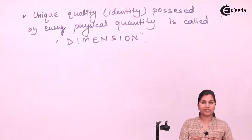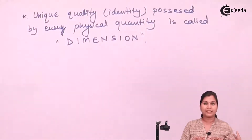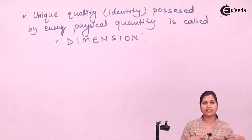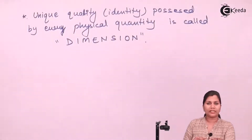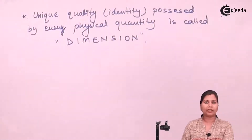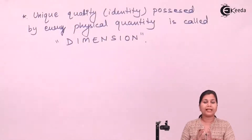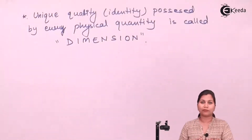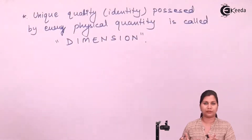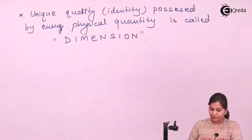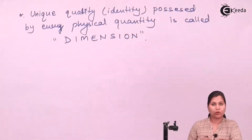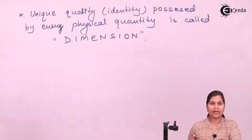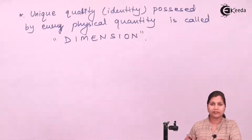These physical quantities — length, mass, temperature, time, velocity, acceleration — all have their particular identity, and that identity can be represented in the form of a dimension. So every physical quantity will have its unique identity, or we can say it will have its unique dimension.